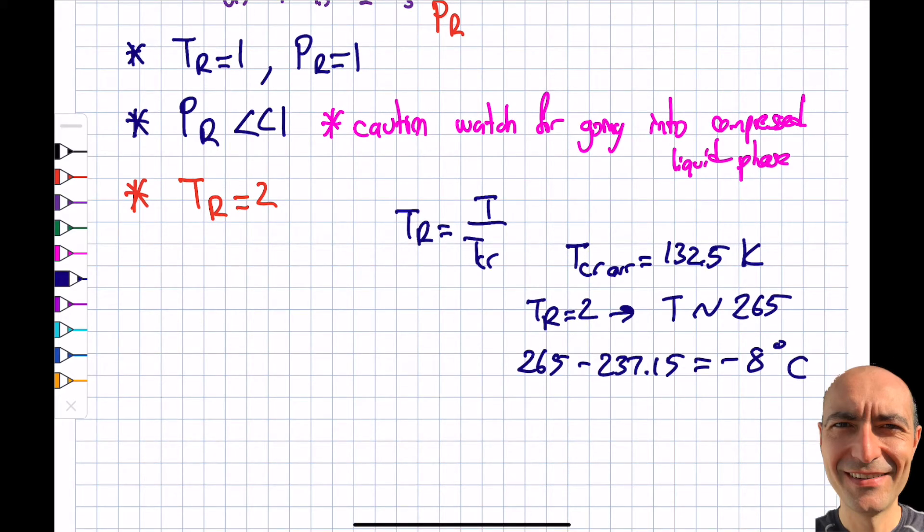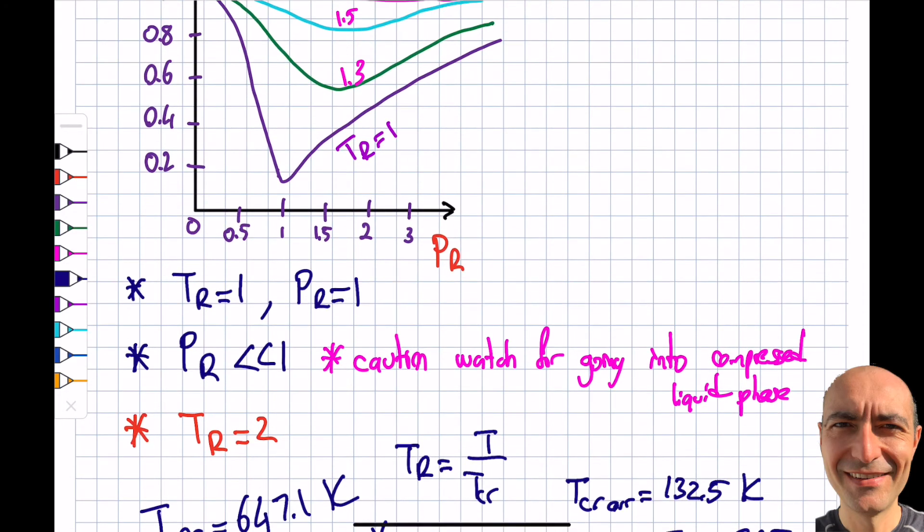But let's do the same arrangement for T critical of water vapor. From the steam tables I can obtain this information. It was 647.1 kelvin. Then for Tr to be two, I have to multiply this by two, so my T needs to be 1294 kelvin. That becomes 1020 Celsius.